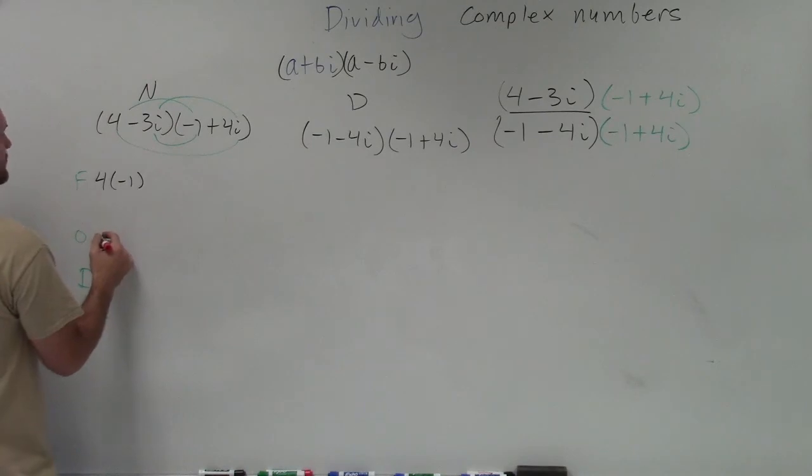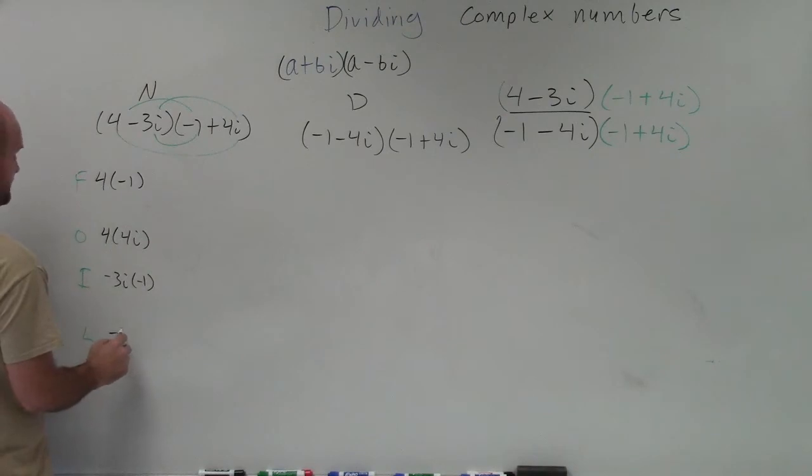So I do 4 times negative 1. For the outer, I do 4 times 4i. For the inner, I do a negative 3i times negative 1. And then for the last, I'll do a negative 3i times 4i.